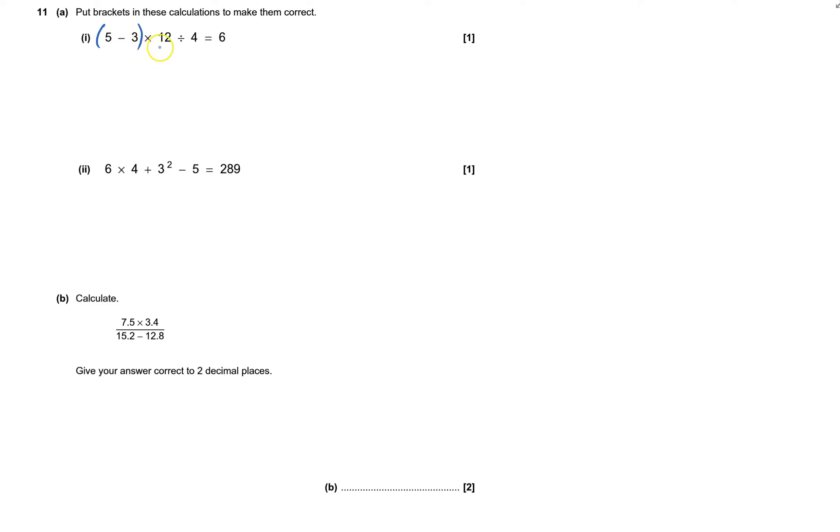5 take away 3, it's 2 times by 12 is 24 divided by 4 is 6. That's good, but put it into a calculator to check that it's right.